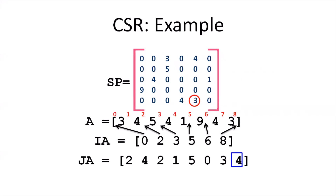This is how the CSR representation looks. For this 5×6 matrix with 30 elements, storing it as a 2D array requires 30 × size of float storage space. Using the CSR representation, we only need 22 elements — comparatively much cheaper than the two-dimensional array representation.